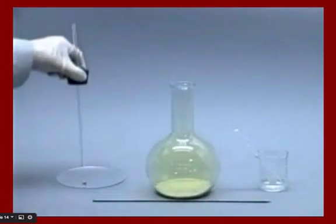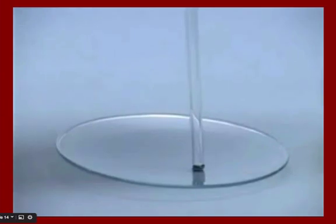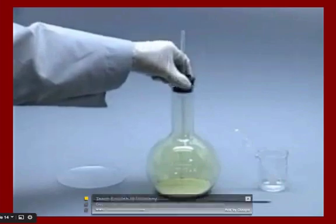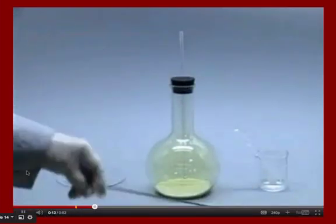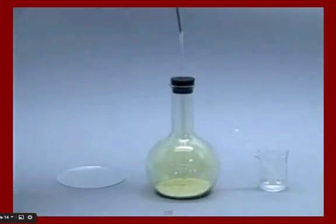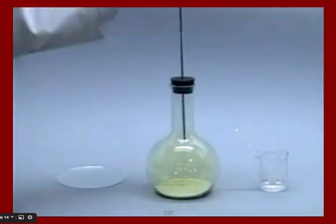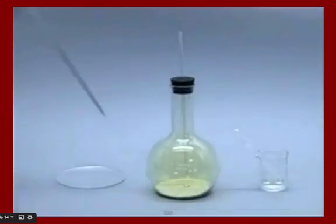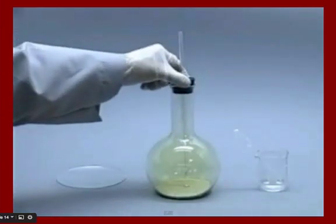A small piece of sodium metal is placed in a flask containing yellow chlorine gas. The flask also contains sand to prevent the heat, which will be generated by the reaction, from cracking the glass.